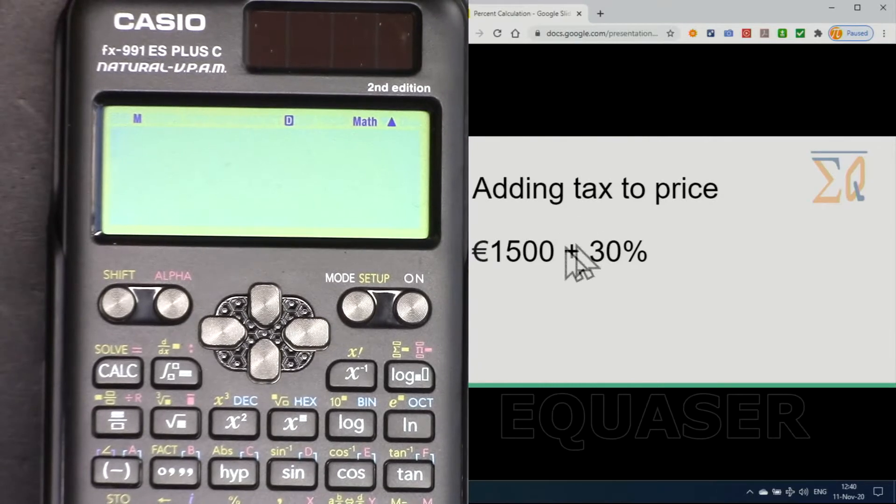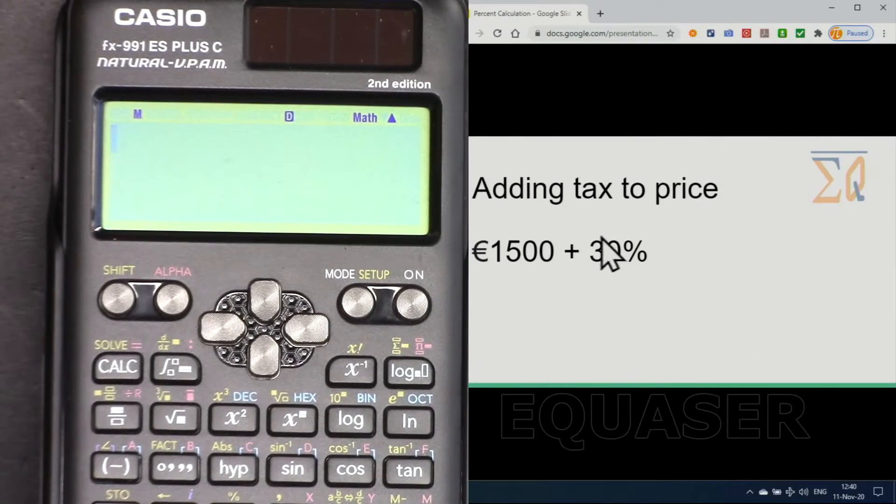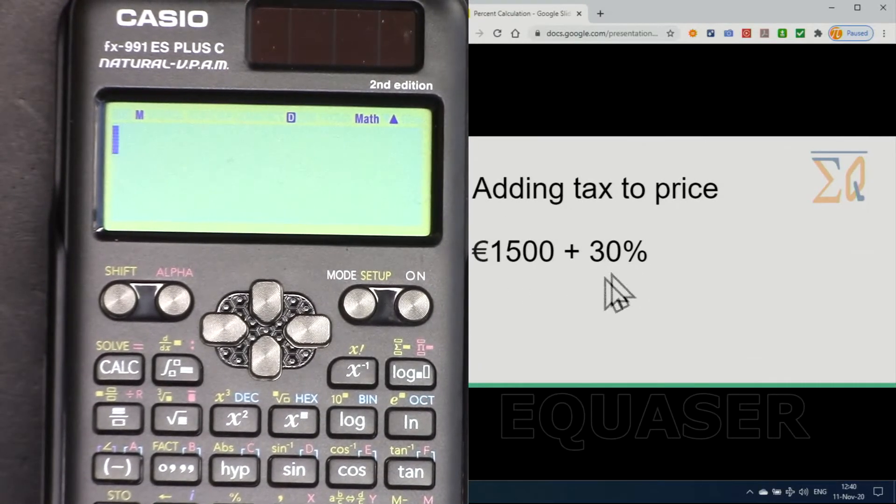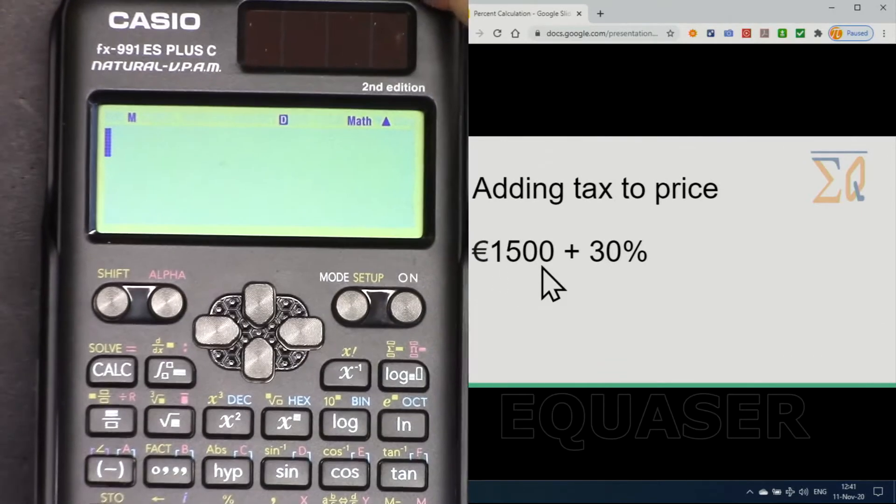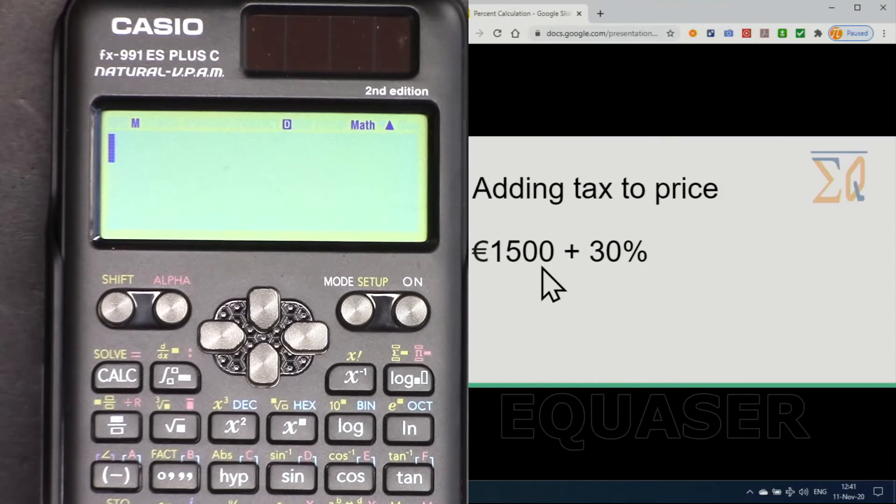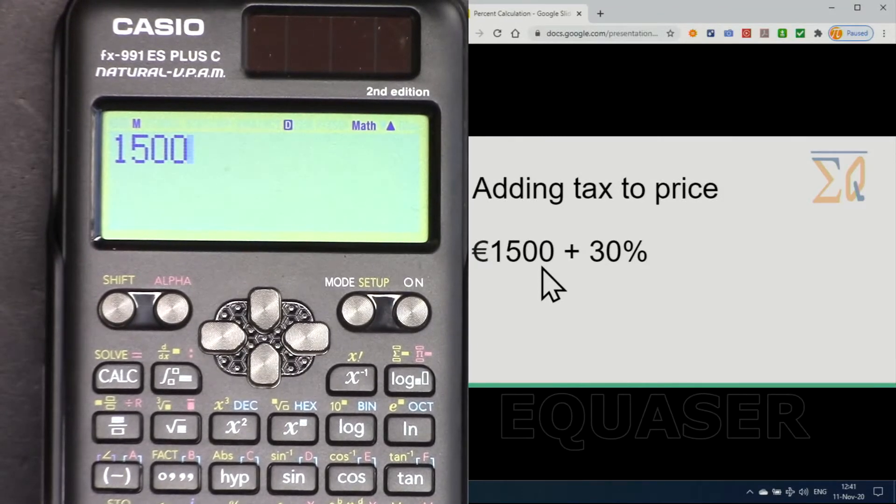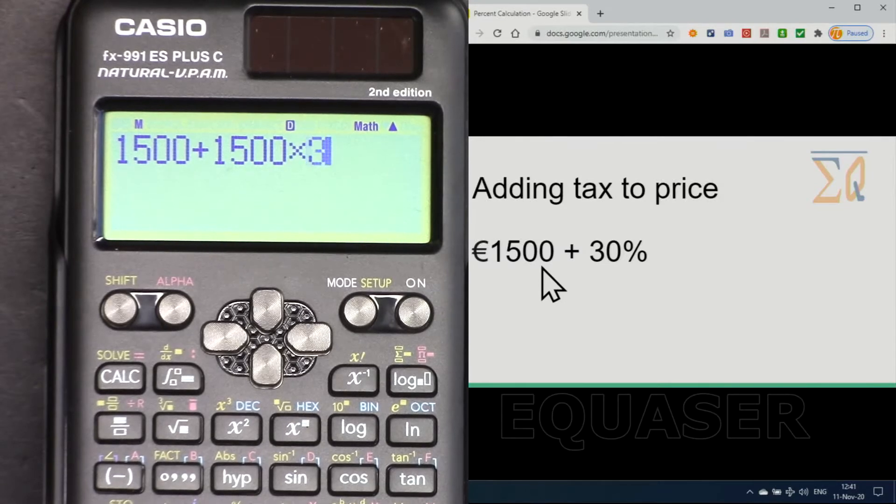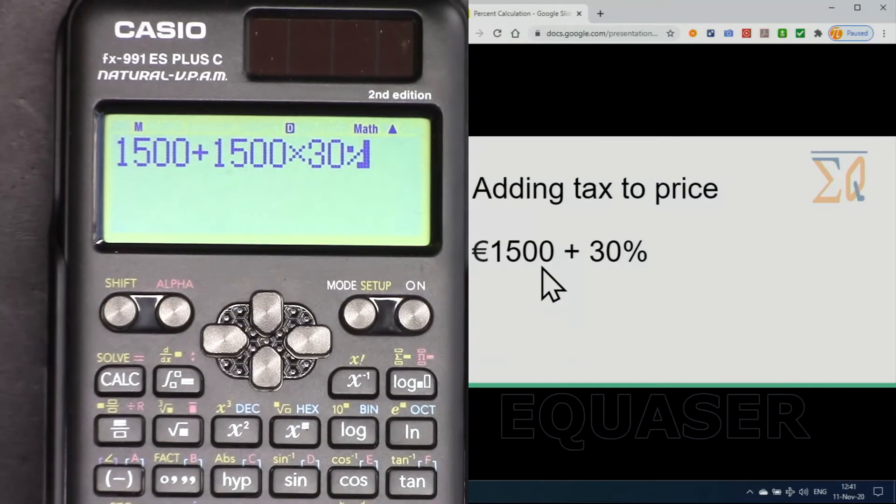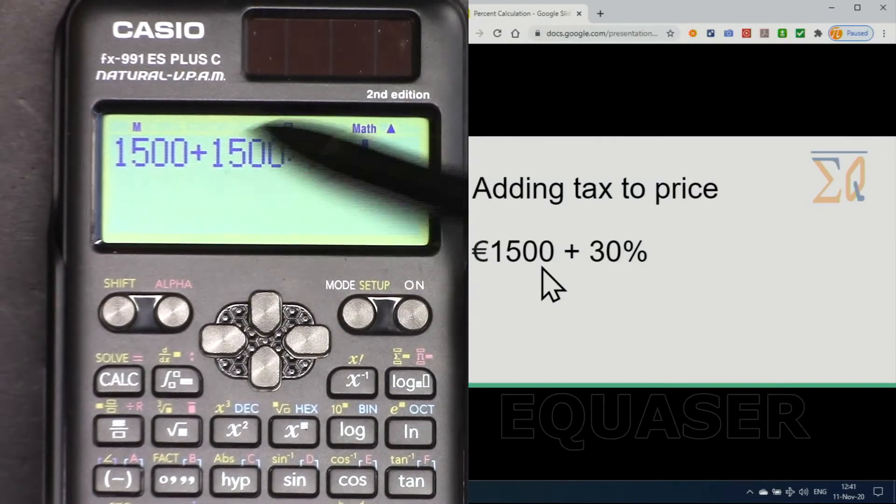If you want to add tax to a certain value or increase, for example, 30% to 1500, here is how you do it. We type 1500 plus 1500 times 30, shift percent. This gets the 30% of 1500 and adds it to 1500, and the answer is 1950.